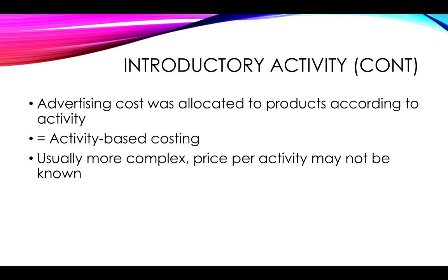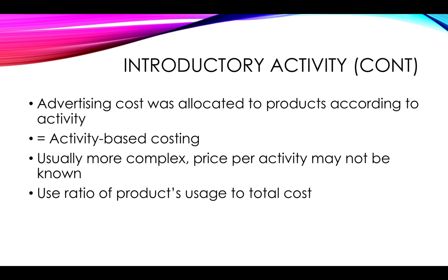Usually, however, it is a little bit more complex, as you wouldn't necessarily know what the price per activity was. For example, if you got an advertising bill of R20,000 but had no idea how many ads this was for — perhaps it was billed on hours, or on an advertising campaign for a particular period — it is still possible to look at the ratio of the product's usage of that cost to the total. For product A, there were 8 advertisements compared to the total of 20 for products A, B, and C. You could use that ratio of 8 over 20 to determine how much cost to allocate to product A. It is a more complicated way of costing, but it is certainly more accurate.